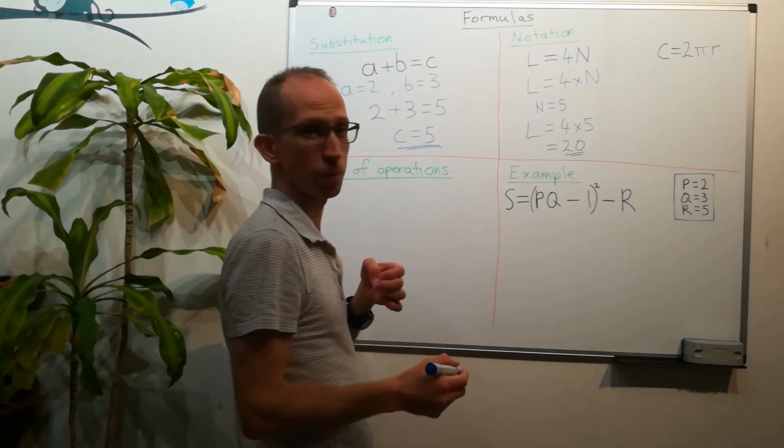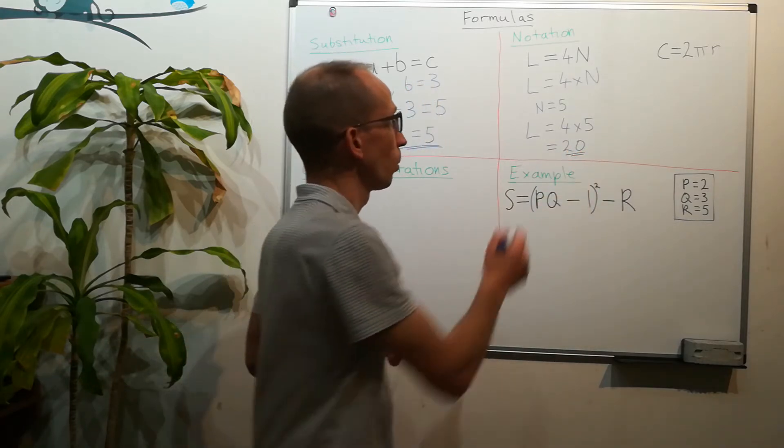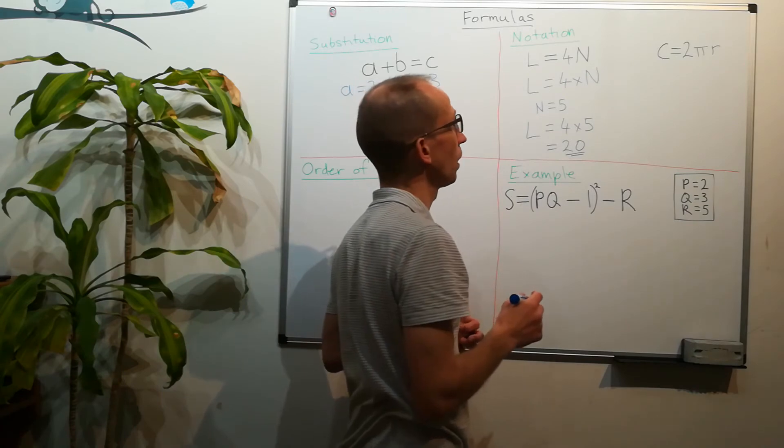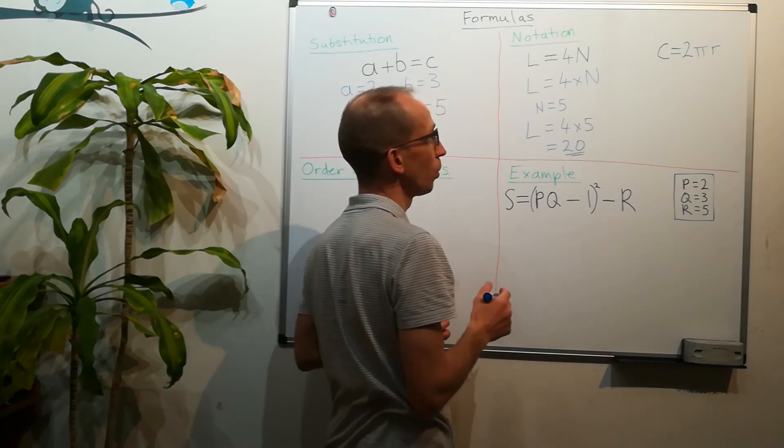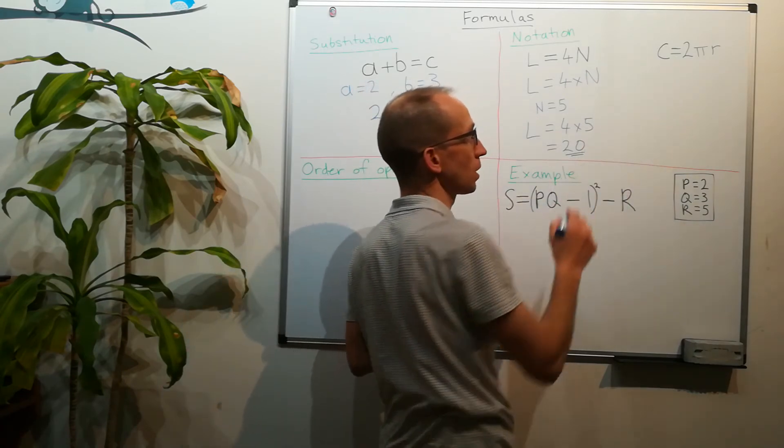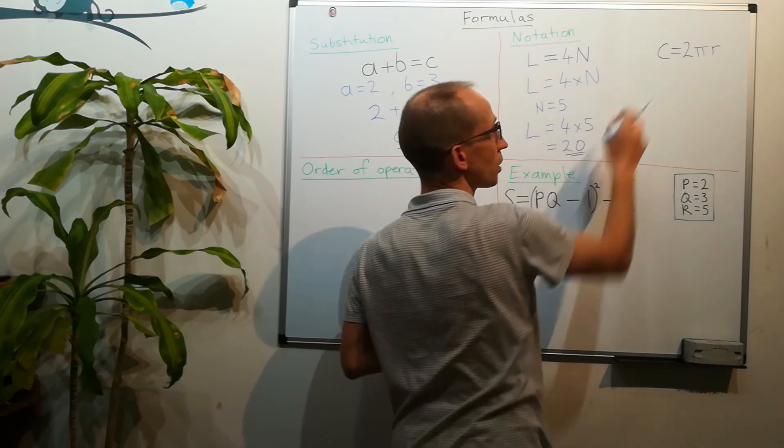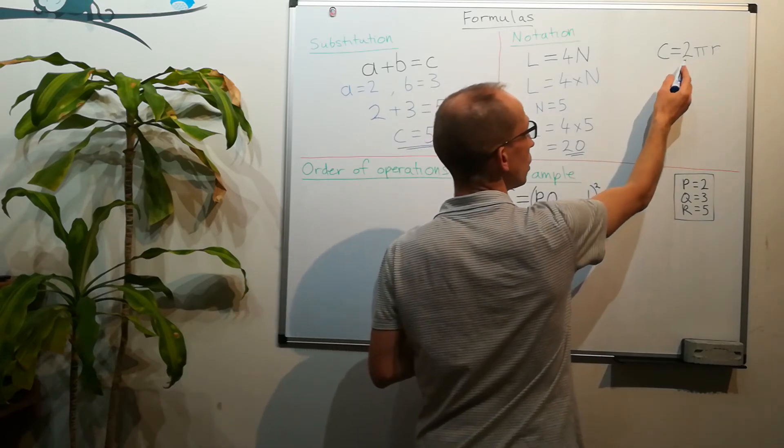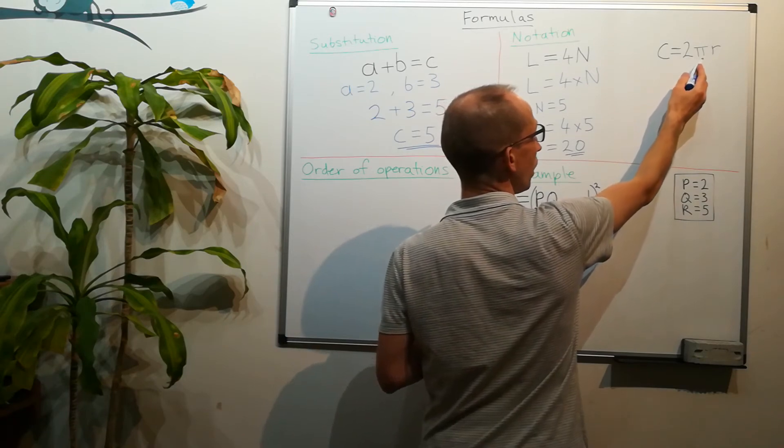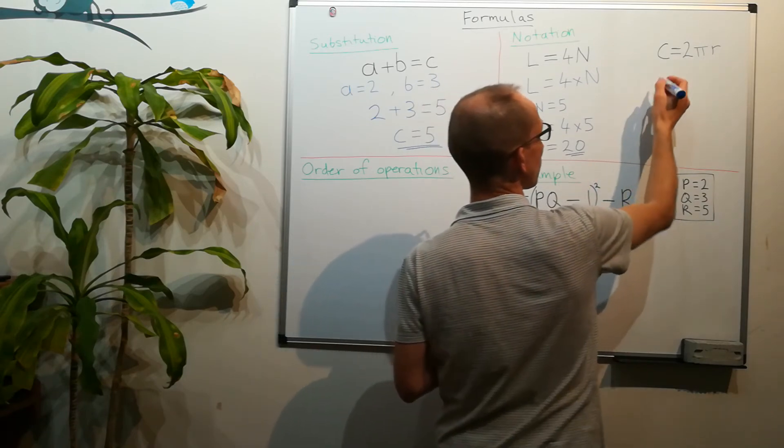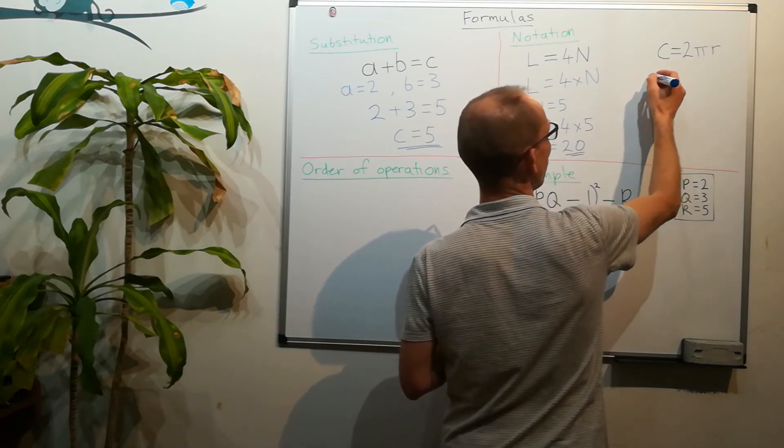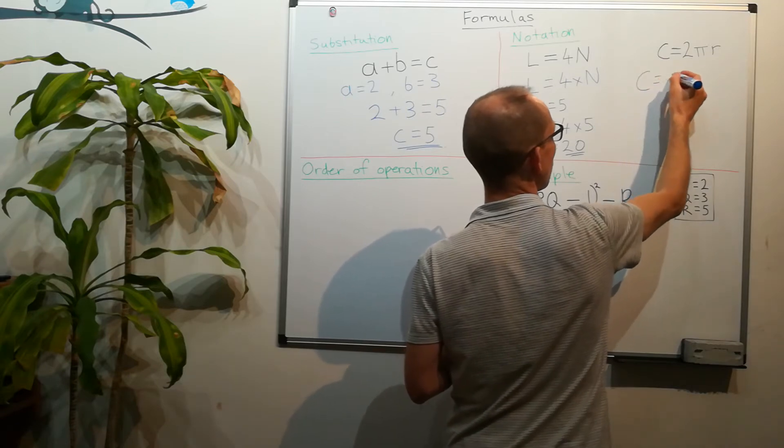We've got another formula up here which is similar. You might recognize this as the circumference of a circle, which is equal to 2 times pi times the radius. So we would rewrite this as c is equal to 2 times pi times r.